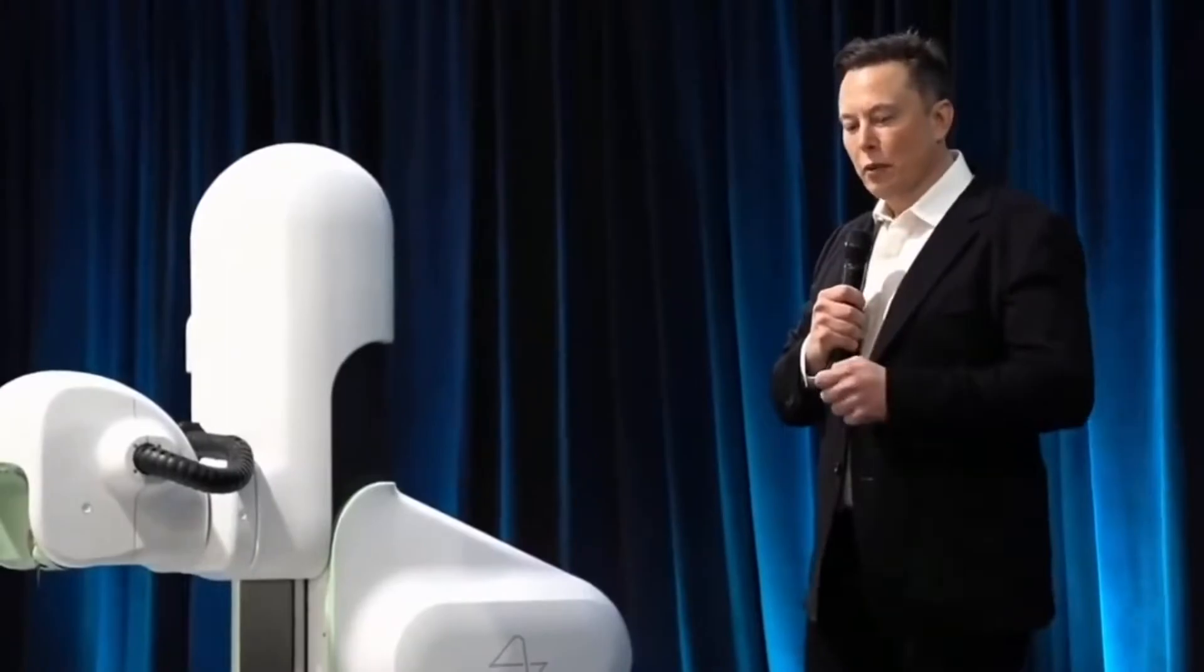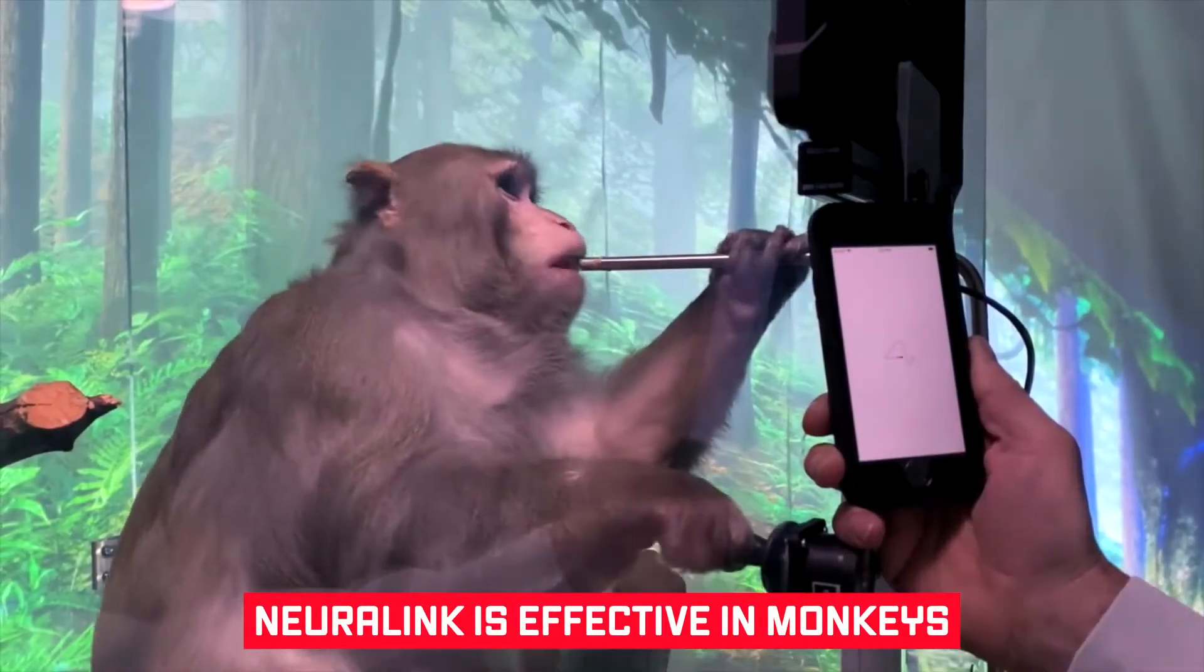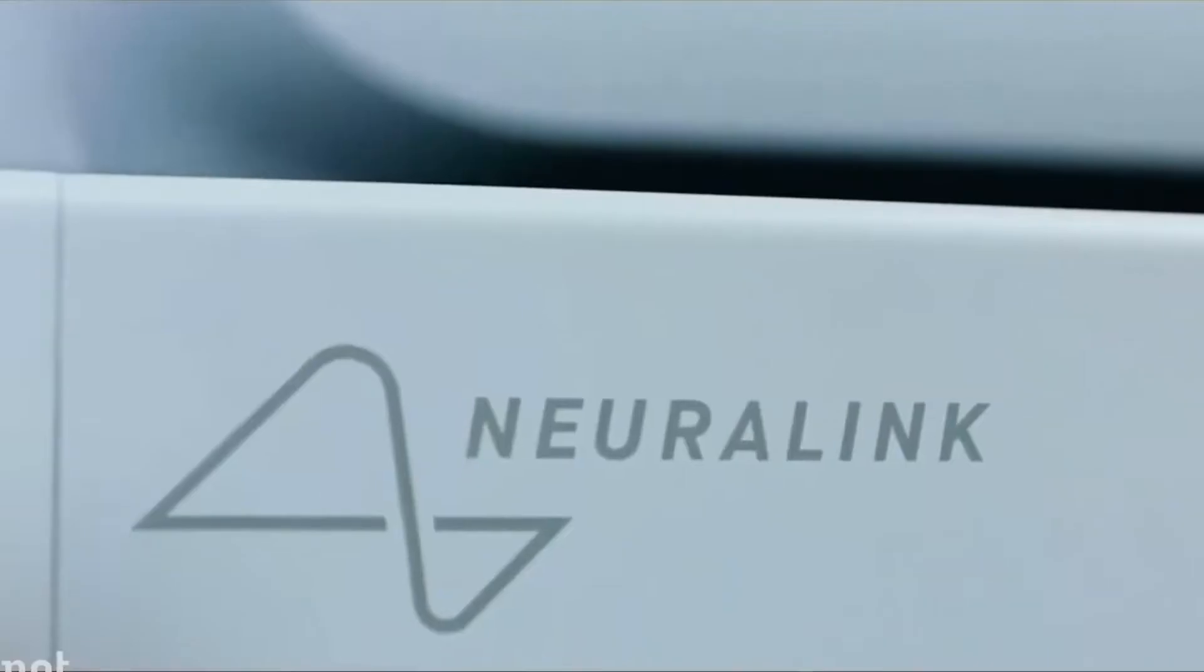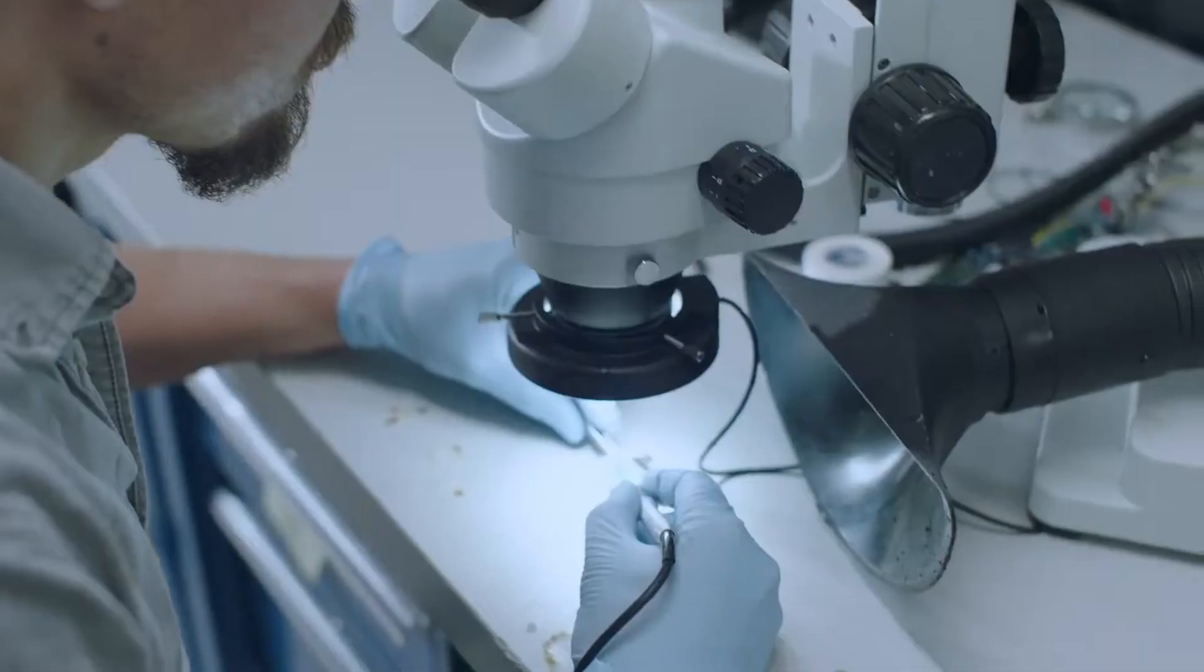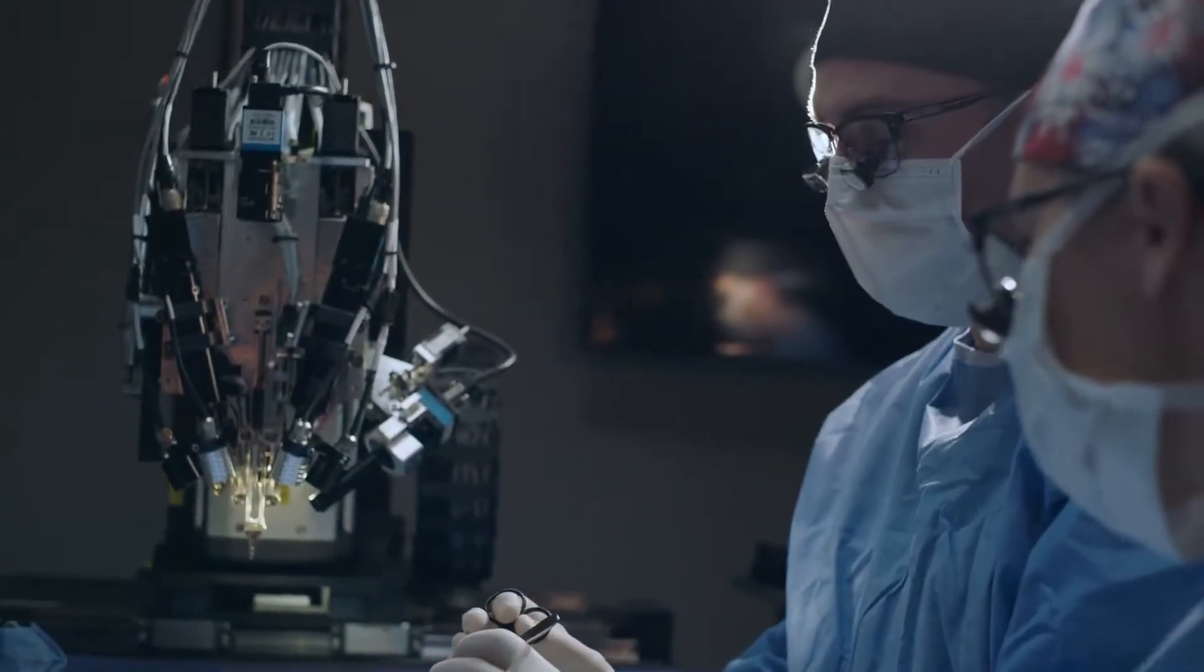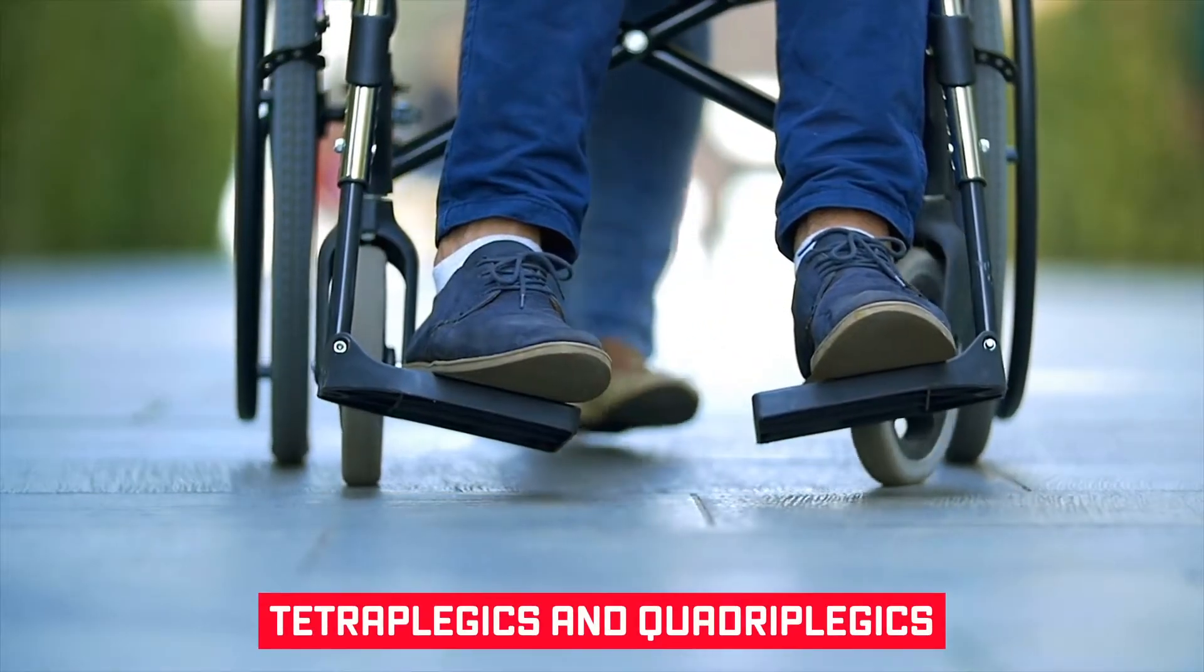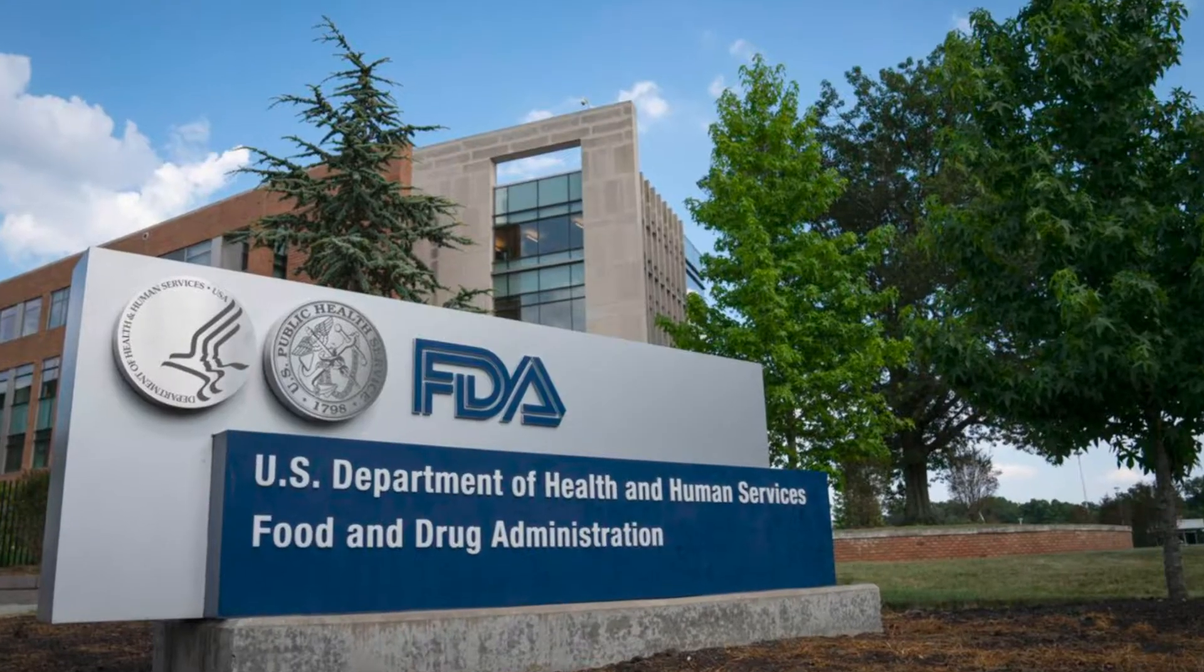In one of his interviews, he stated that Neuralink is effective in monkeys and they are currently conducting extensive testing to ensure it is extremely safe and reliable and that the device can be securely removed. They aim to have this in their first humans, which will be patients who have severe spinal cord injuries such as tetraplegics and quadriplegics once the FDA has approved it.